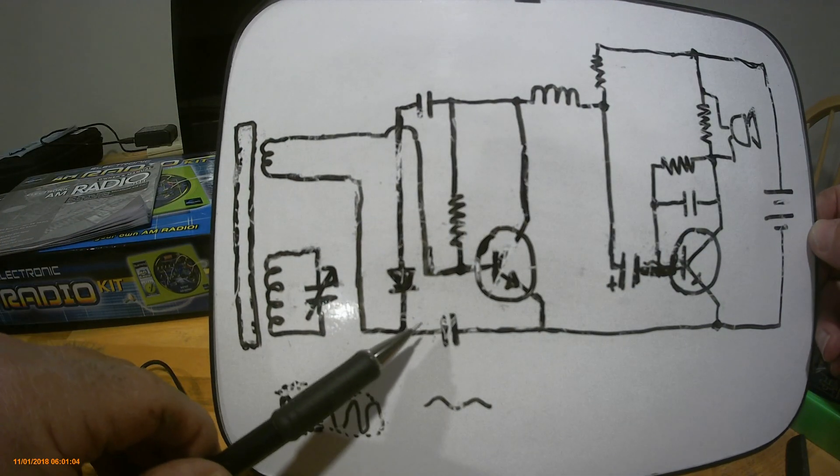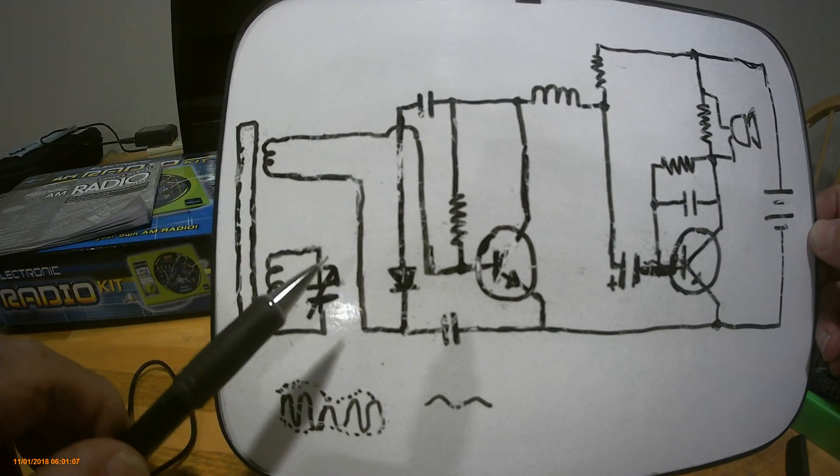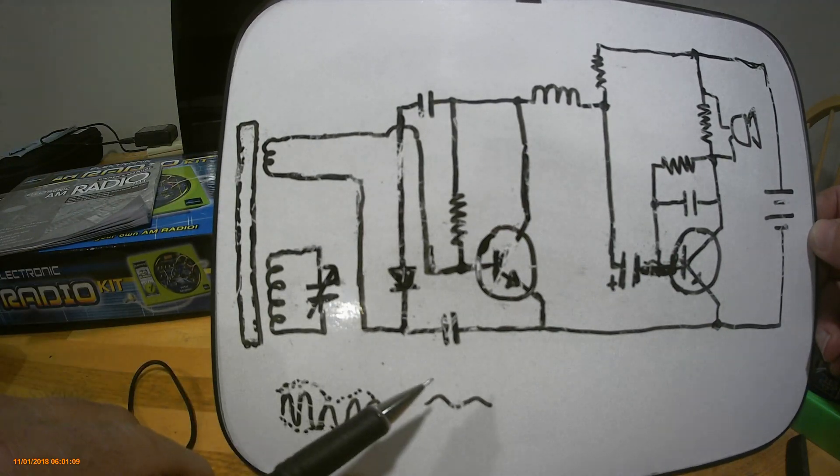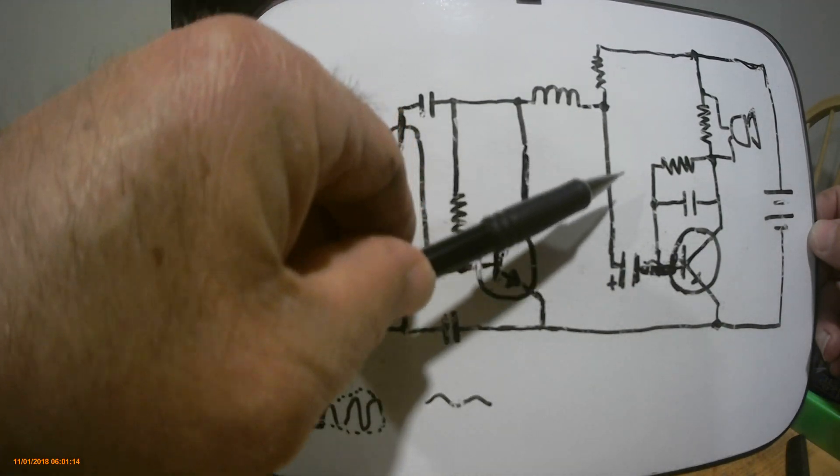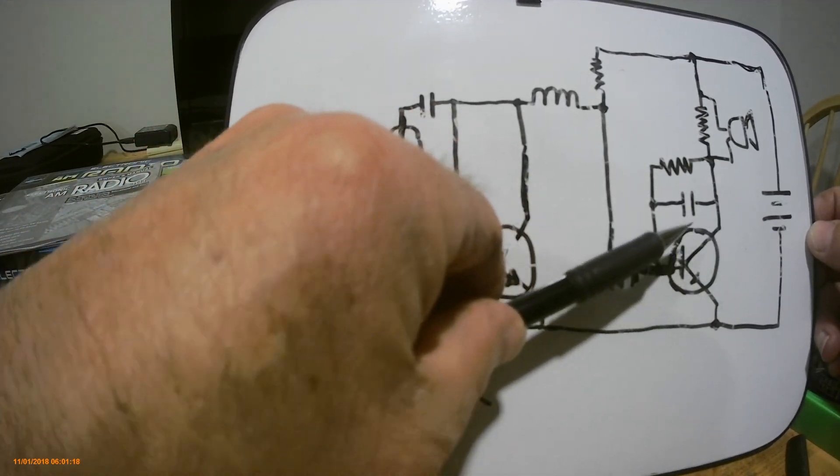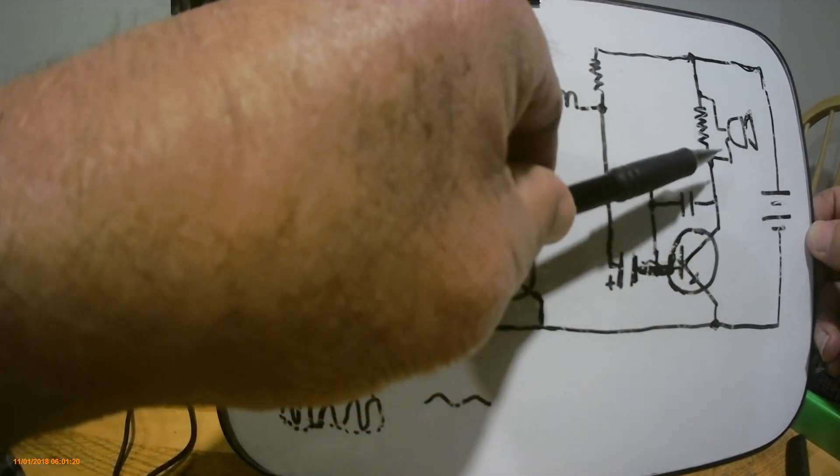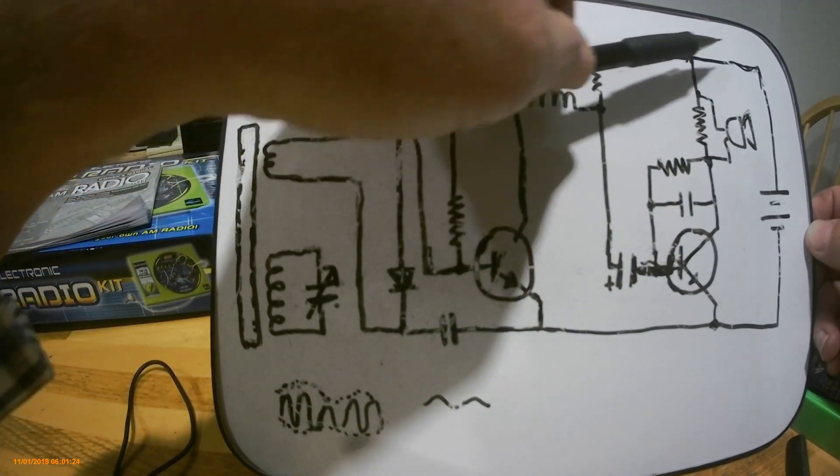As it comes around, it goes into this diode, and the diode strips away the radio frequency information, leaving just the audio information itself. That audio information comes down through this coil, through this capacitor, into the second stage transistor, and then the signal is amplified enough to drive an earphone, and then back around.